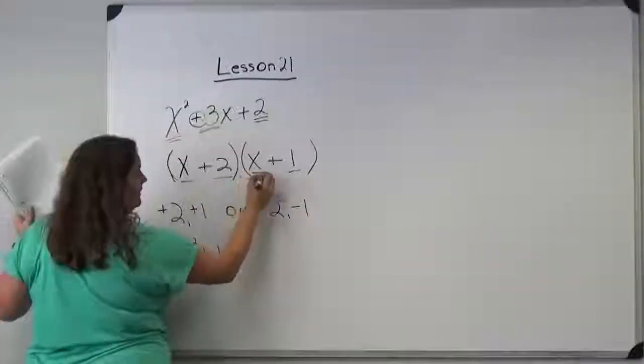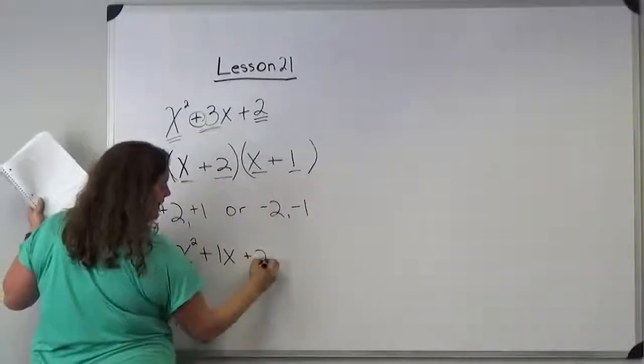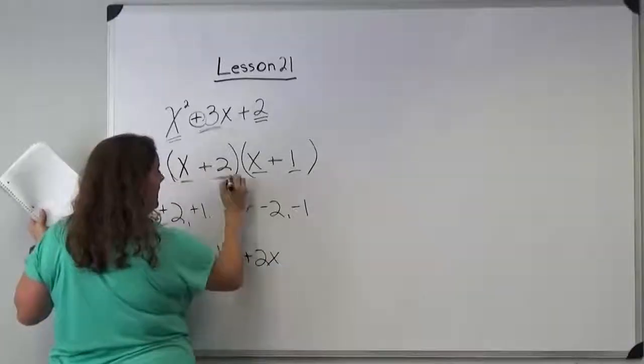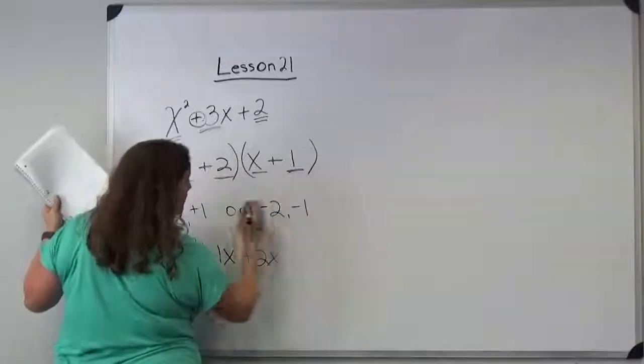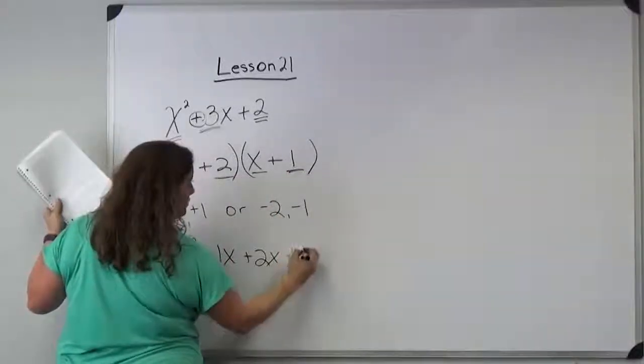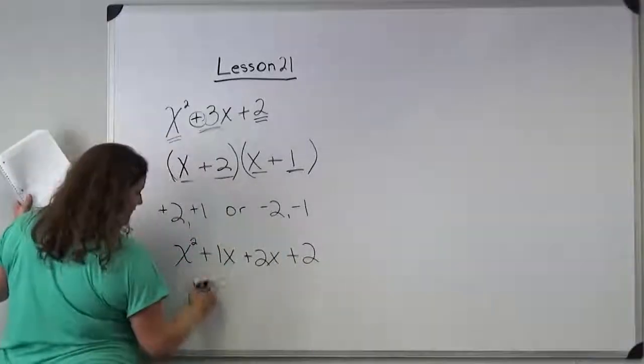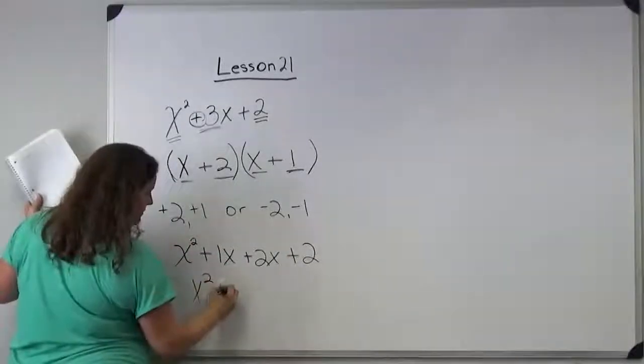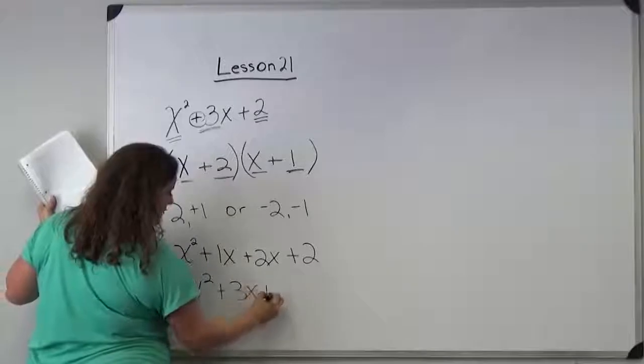Inner, plus 2x. And last, 2 times 1 is 2. So we get x squared plus 3x plus 2,